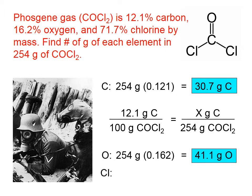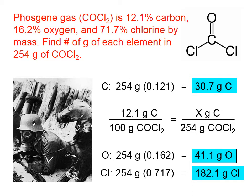Finally, let's find the chlorine. We could simply answer 182.1 grams, because the sum of these three masses must add up to 254. If we wanted to show the percentage calculation, we would take 254 grams multiplied by the decimal form of 71.7%, and it gives us the same answer.